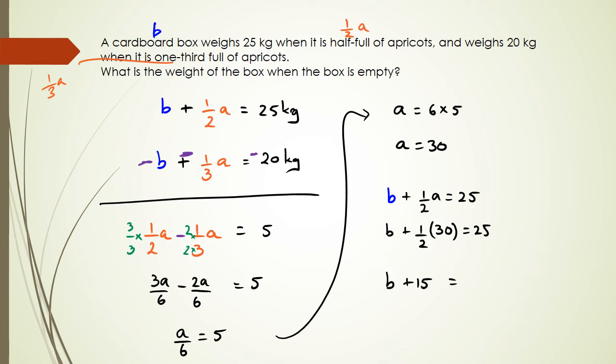So B equals, well, B plus 15 equals 25, and then B equals 25 take away 15, and you're left with B is equal to 10. So that means the box empty is 10 kgs.